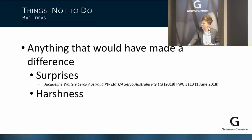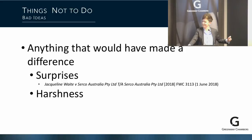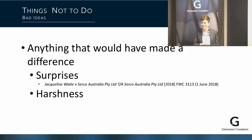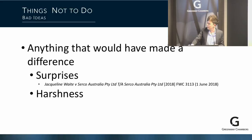Avoid surprises. In Serco v Waite — a recent decision — Ms Waite, a security guard, fell asleep at work and was caught because they were conducting covert surveillance on a different employee who was stealing things. They did everything wrong: had a secret meeting, brought her in asking 'did you do anything wrong on Thursday?', then in the dismissal meeting dramatically showed her the photos. She won her case — didn't get her job back but received some compensation — because it was a significant enough failure of procedural fairness.